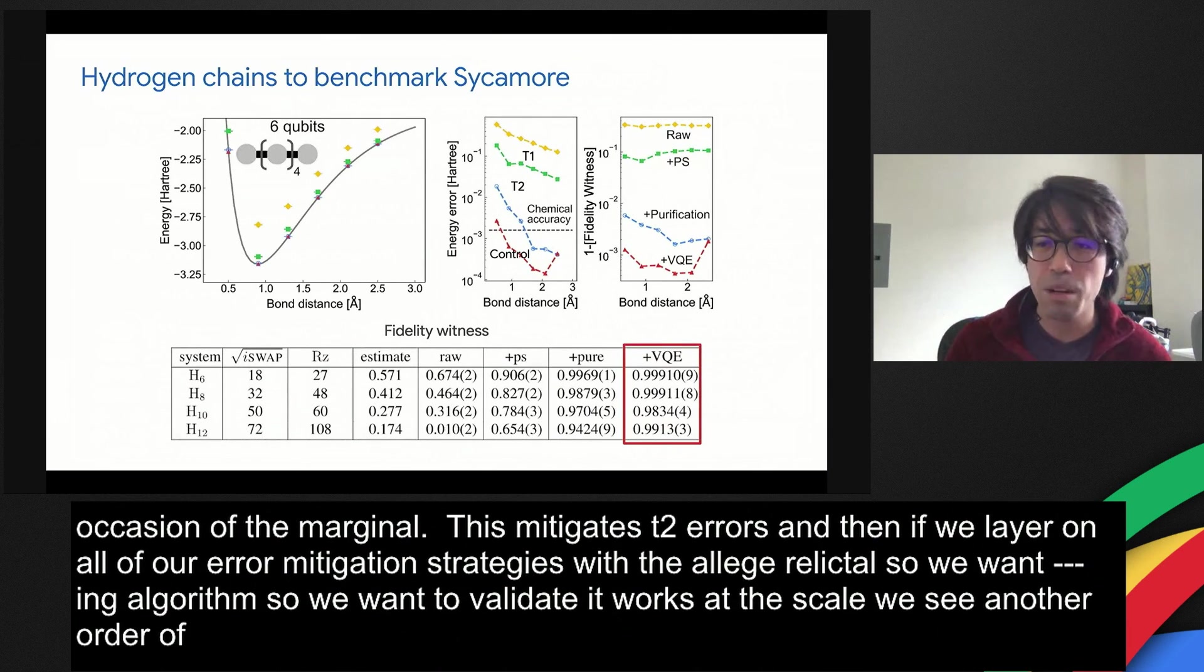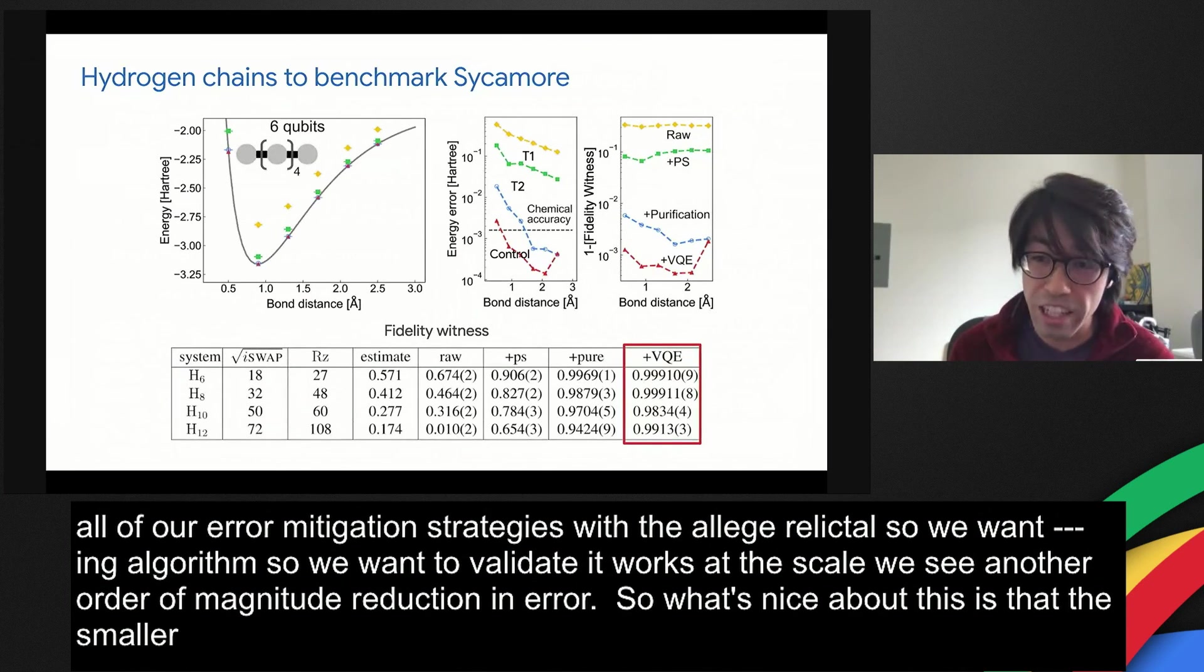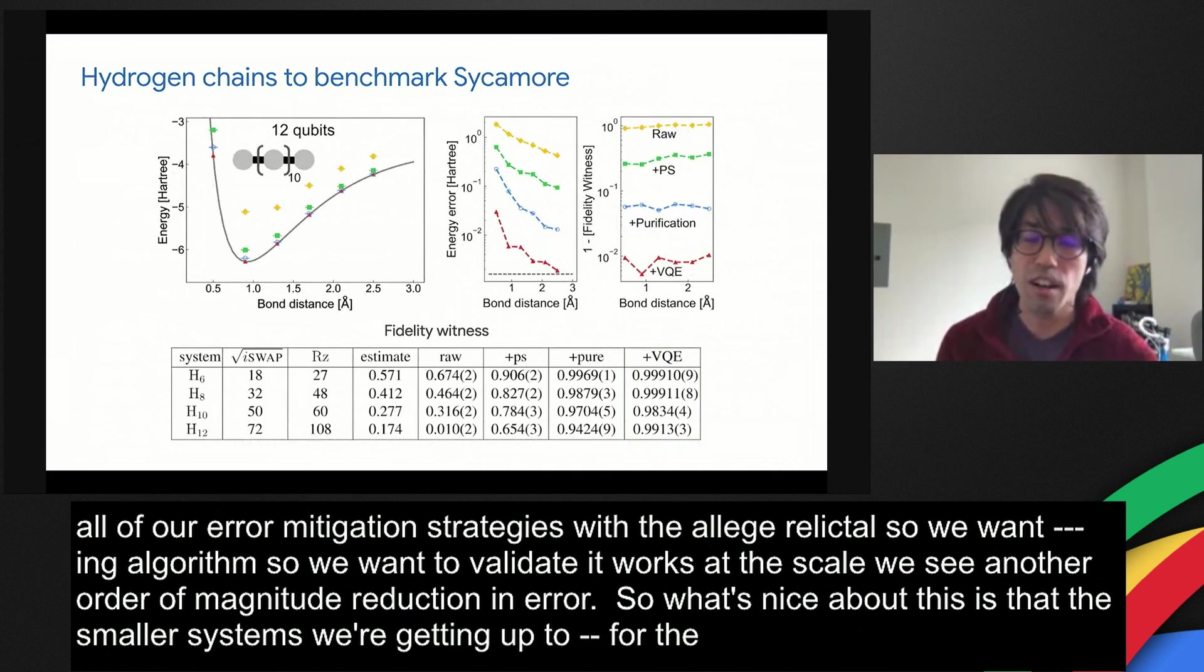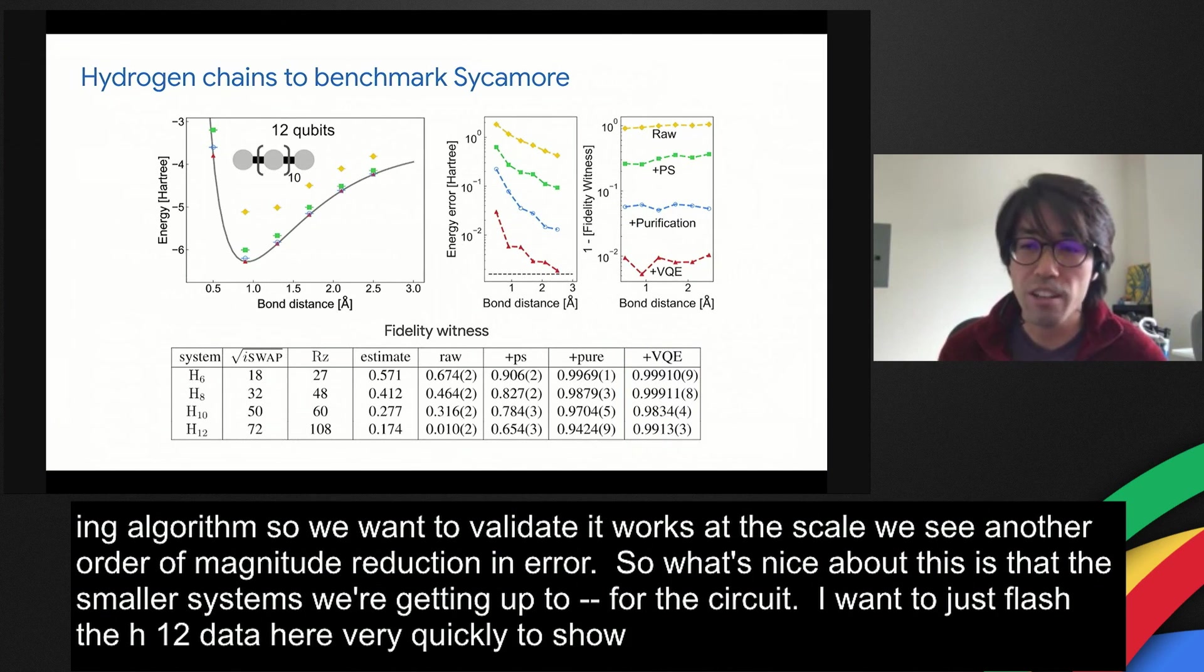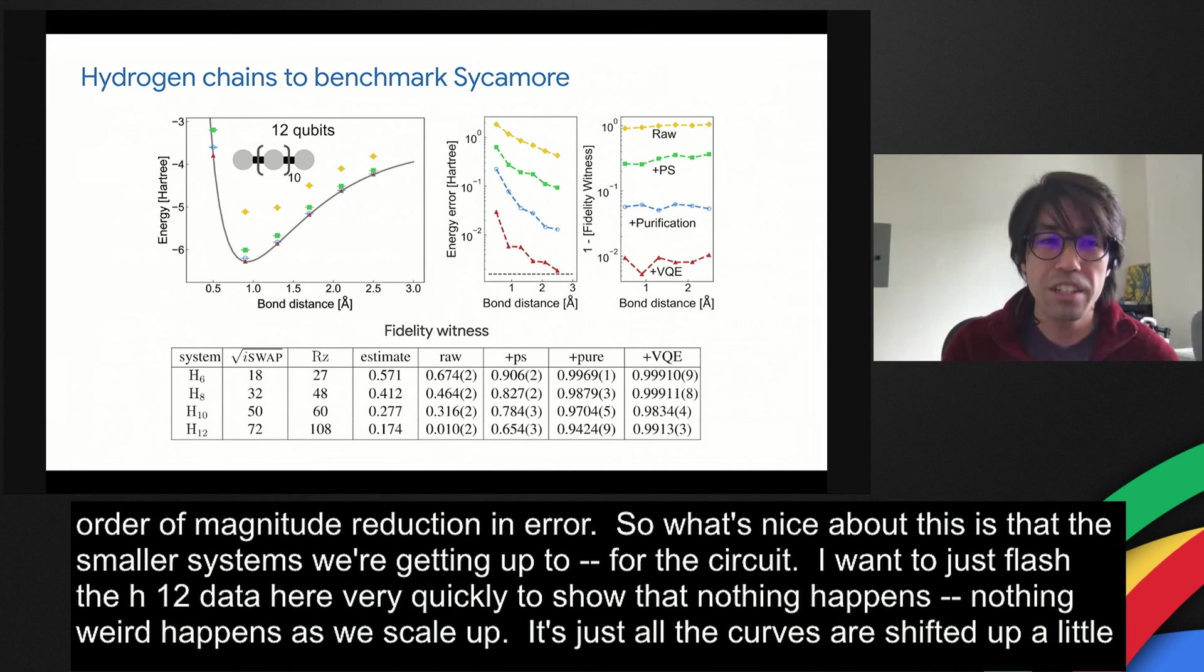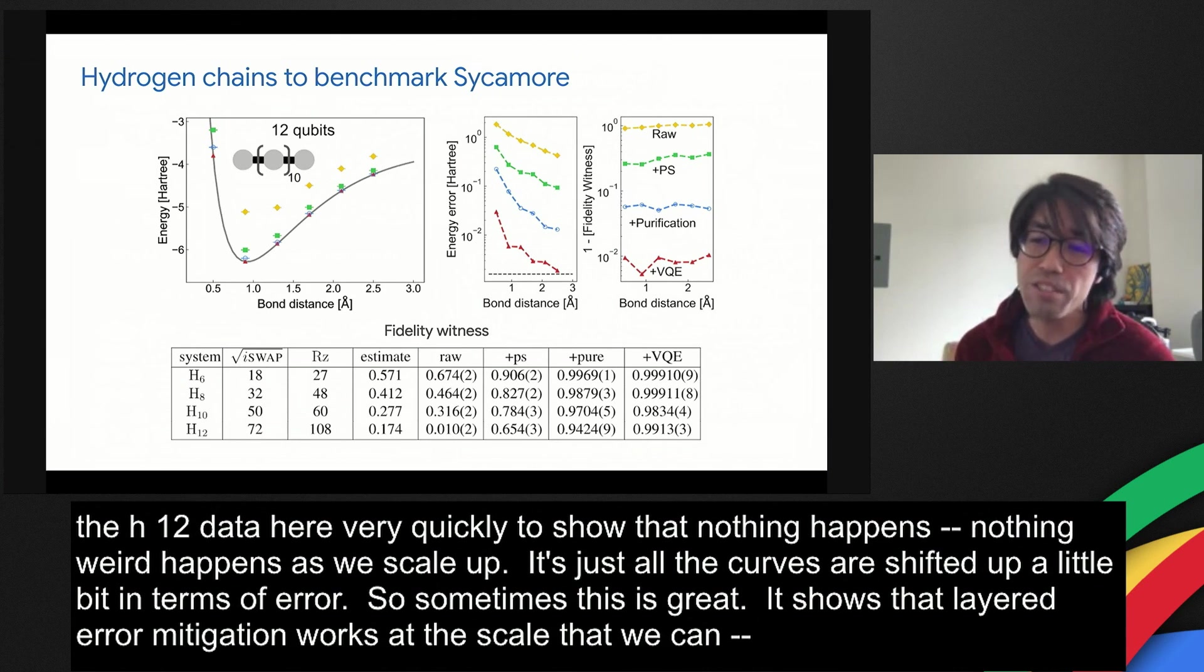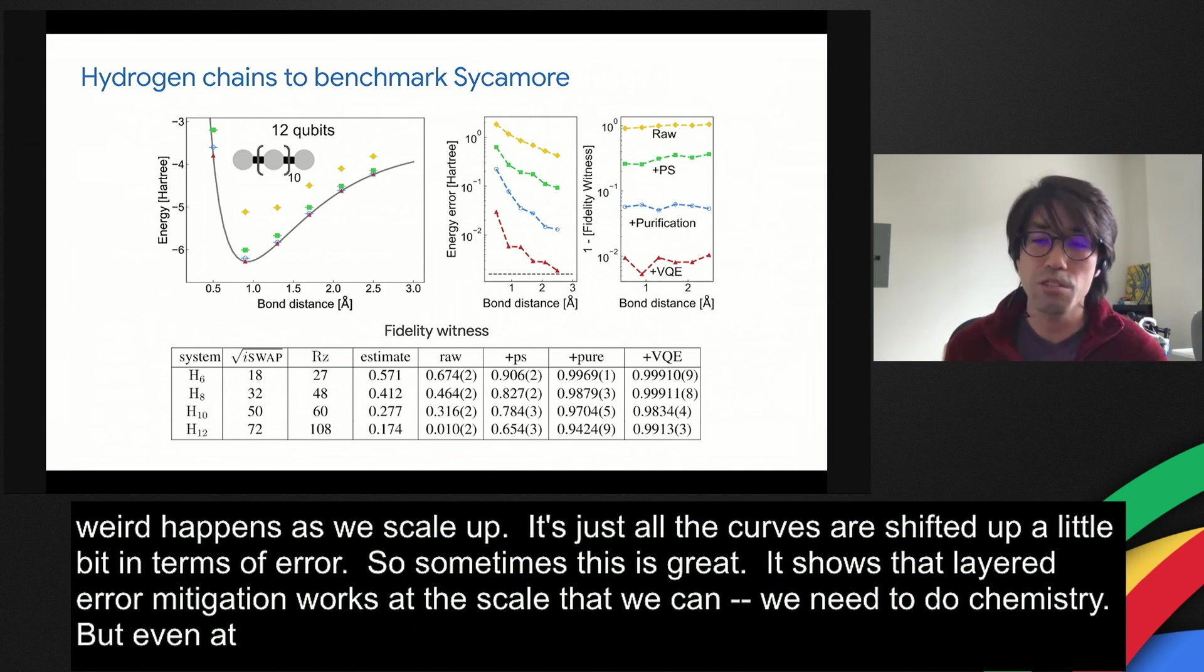What's really nice about this is that in the smaller systems, we're getting up to three nines of fidelity for the circuit. I want to just flash the H12 data here very quickly to show that nothing weird happens as we scale up. It's just all of the curves are shifted up a little bit in terms of error. In some sense, this is great. It shows that layered error mitigation works. It works at the scale that we need to do chemistry.